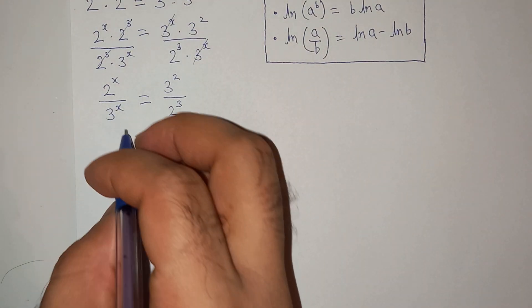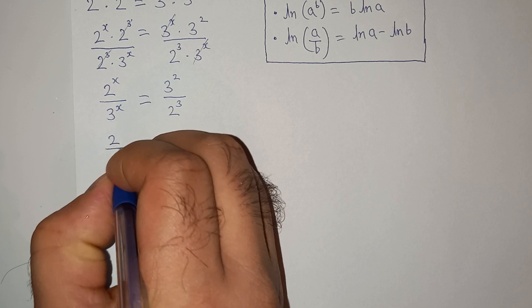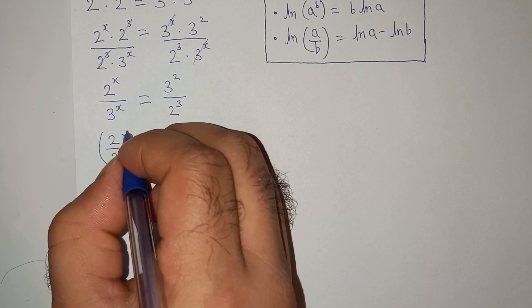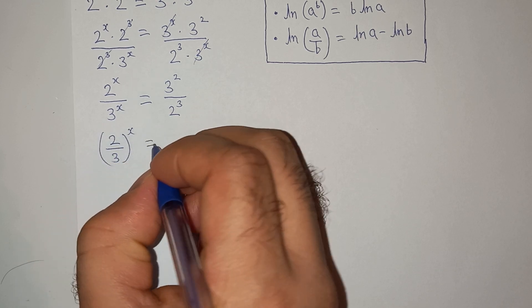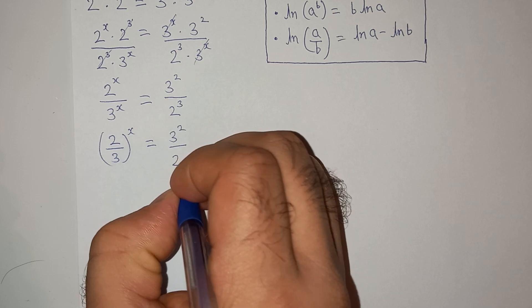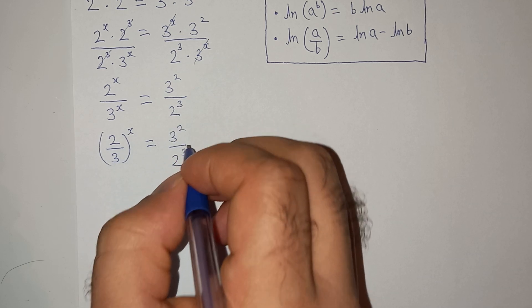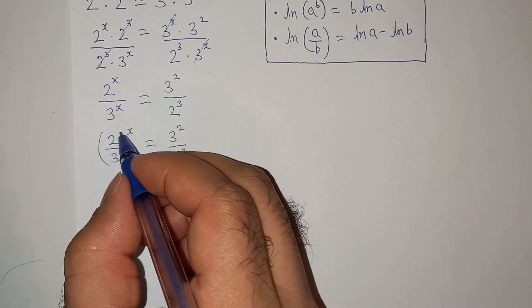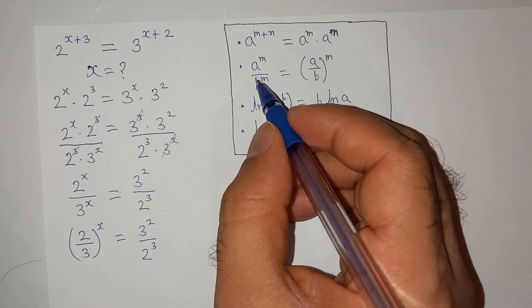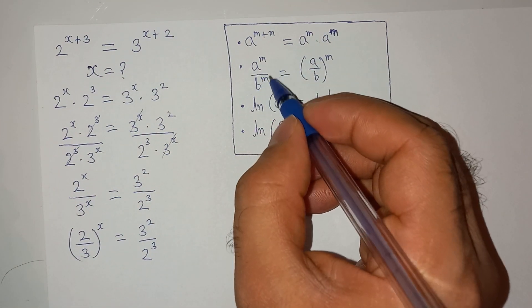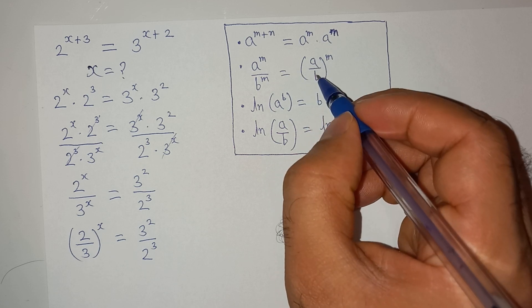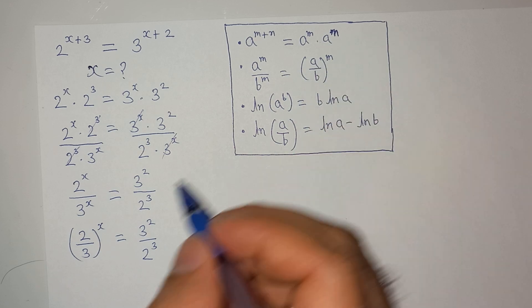This equals 3 squared divided by 2 cubed. And as per the exponential rule, a power m divided by b power m equals (a/b) power m, so the left side becomes (2/3) power x.